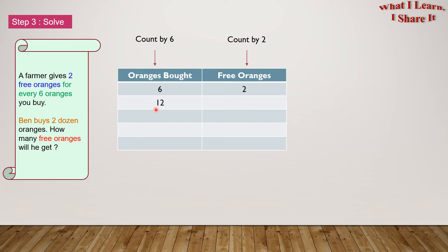So if there are 12 oranges bought, then how many free oranges are there? Right, there are 4. If there are 18 oranges bought, how many free oranges are there? Right, there are 6.